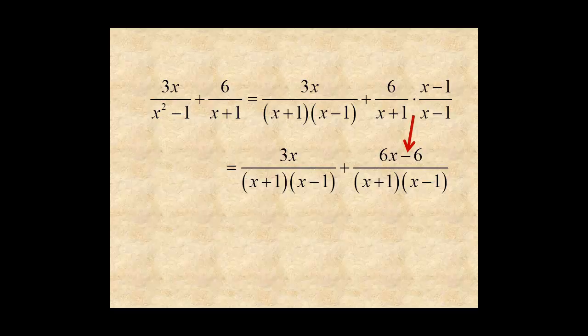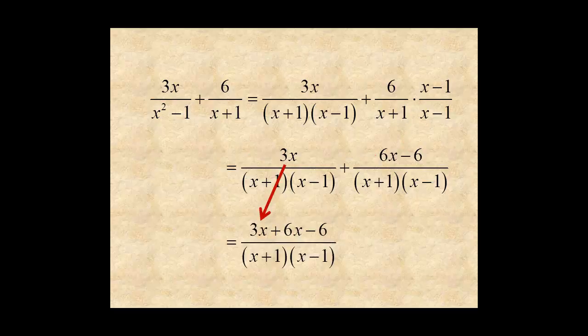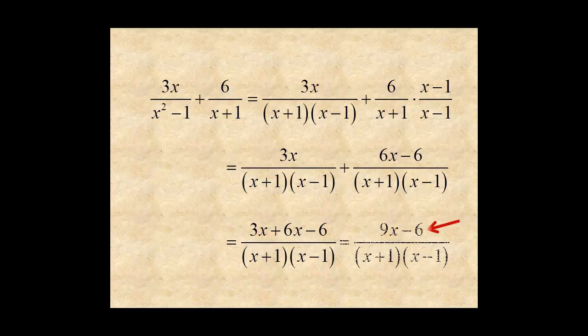Then add the numerators: 3x plus 6x minus 6. And that's equal to 9x minus 6 over x plus 1 times x minus 1.